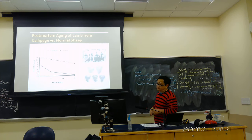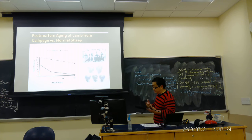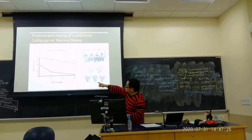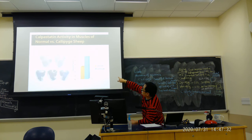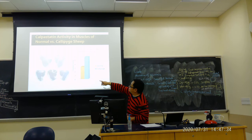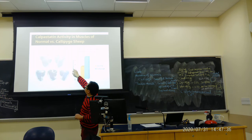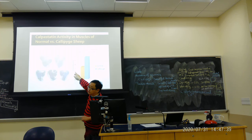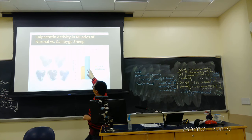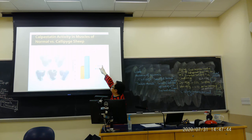Myostatin — we like it. If cattle have that, it's very good for tailors. But Callipyge is not good. Look at Callipyge and normal: the calpastatin level in Callipyge is huge — almost double compared to normal.